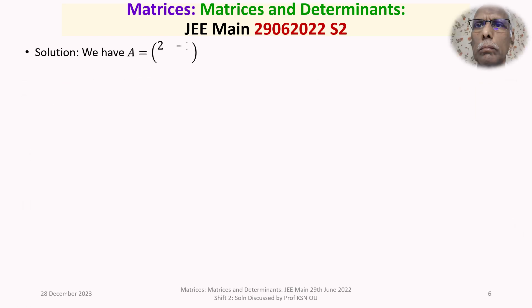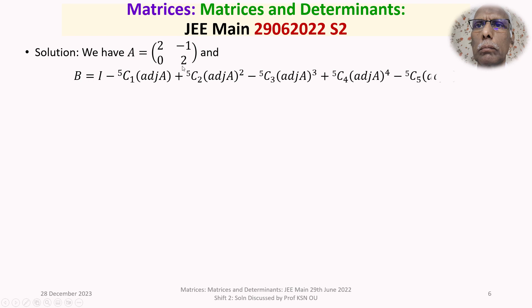We now discuss the solution in detail. We have matrix A, and B is equal to I minus 5C1 into adjoint of A, plus 5C2 into adjoint of A squared, minus 5C3 into adjoint of A cubed, plus 5C4 into adjoint of A to the power 4, minus 5C5 into adjoint of A to the power 5. If you look at this carefully, this is the binomial expansion of (I minus adjoint of A) to the power of 5.